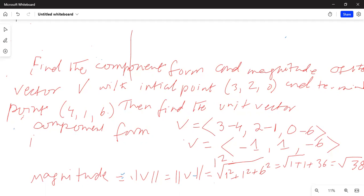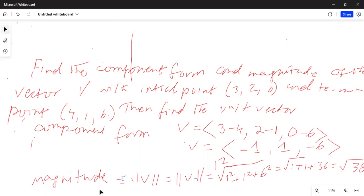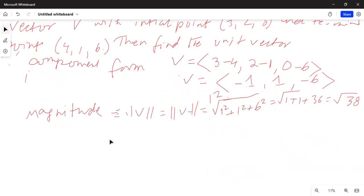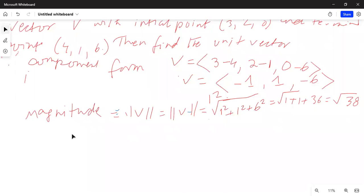So to find the unit vector. Going back, unit vector of v is equal to vector v divided by magnitude of vector v.